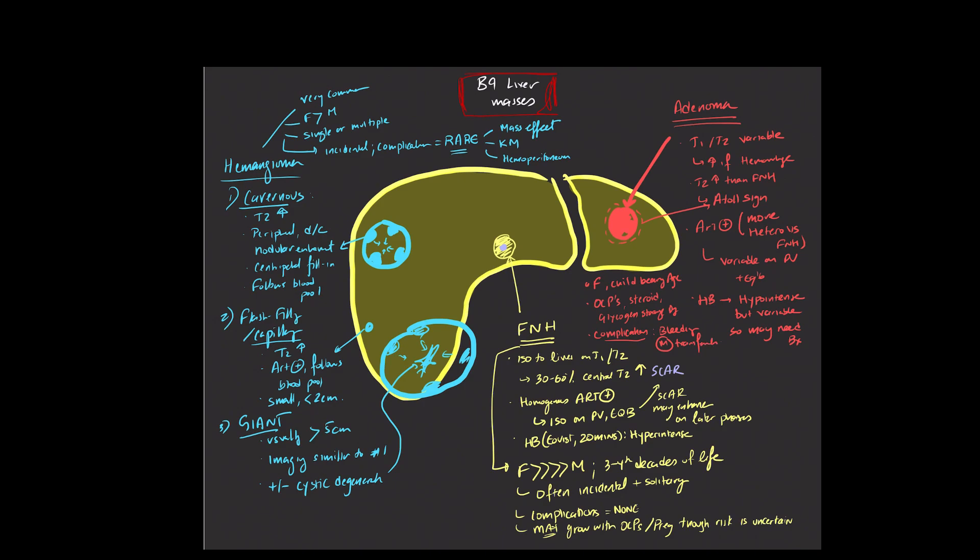A couple of last words on adenomas before we wrap up. It's important to remember that there are actually different subtypes of adenomas that can be seen with slightly different imaging appearances, and certain subtypes may actually contain intralesional lipids. So if you see a fat-containing mass in a patient who's female on oral contraceptive pills, you really do want to think of the possibility that it represents a liver adenoma. And you can have multiple adenomas, and particularly if it's greater than 10, it's known as adenomatosis. So with that, I thank you for your attention.